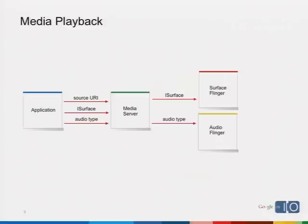Another reason for this architecture: in many cases — for example the G1 and the Sapphire device you received today — those devices have hardware codecs. We can take advantage of a DSP in the device to accelerate decoding, for example H.264, and offload some of that from the main processor. That frees the processor up to do other things. All of this is happening inside the media server process — we don't want to give applications direct access to the hardware, so it's another good reason for putting this inside the media server process.